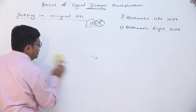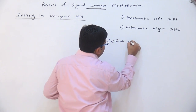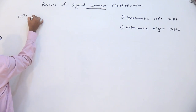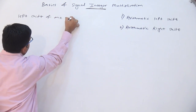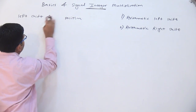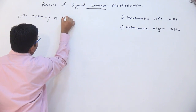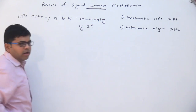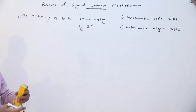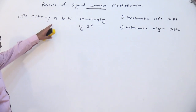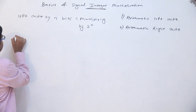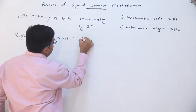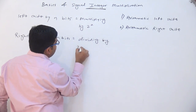You should remember this principle: left shift by n bits is equal to multiplying by 2 to the power n. You shift 1 bit, it gets multiplied by 2. You shift again 1 bit, it again gets multiplied by 2. So if you shift n bits, it gets multiplied by 2 to the power n. Similarly, right shifting by n bits is equal to dividing by 2 to the power n.